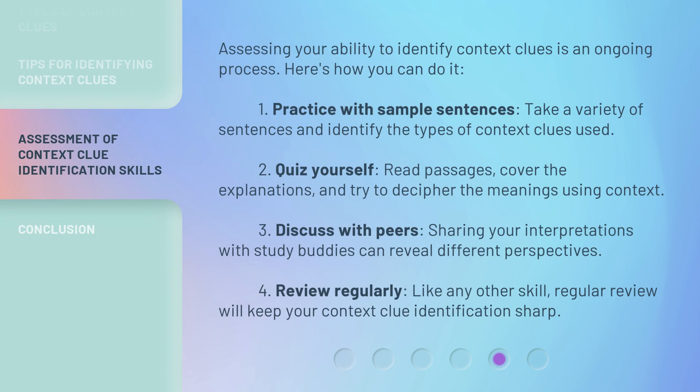Assessing your ability to identify context clues is an ongoing process. Here's how you can do it. 1. Practice with sample sentences — take a variety of sentences and identify the types of context clues used. 2. Quiz yourself — read passages, cover the explanations, and try to decipher the meanings using context. 3. Discuss with peers — sharing your interpretations with study buddies can reveal different perspectives. 4. Review regularly — like any other skill, regular review will keep your context clue identification sharp.